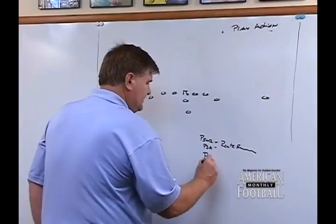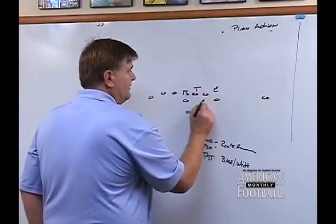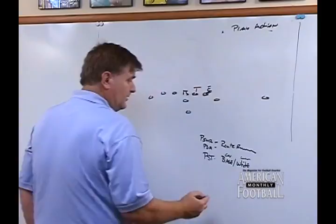The play-side tackle's rule would be base. If he's covered, he would base. If he's uncovered, he would block out — we call it white. So if he had a two-eye and a seven technique, he's uncovered and he would turn out on the seven technique. If he had a two-eye and a five technique, he would base the five technique. Covered or uncovered — that's our rule.